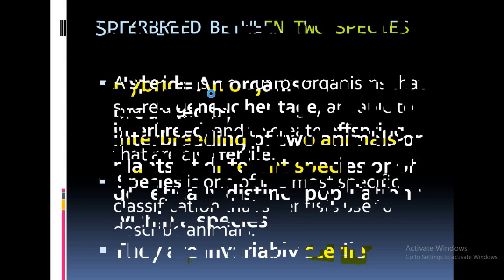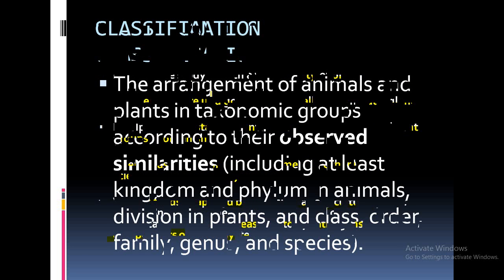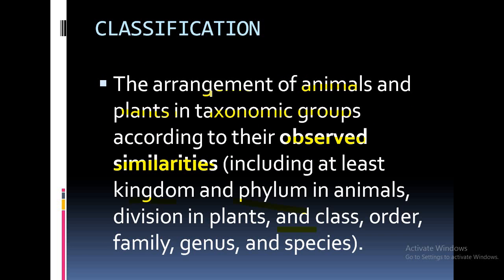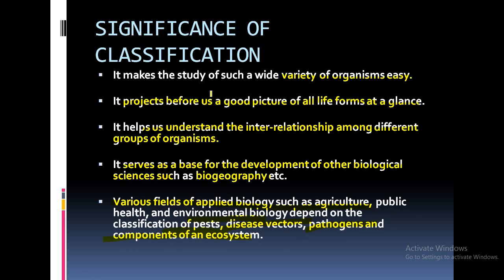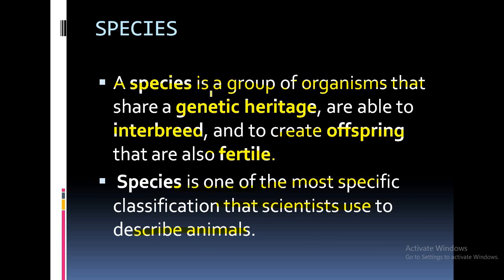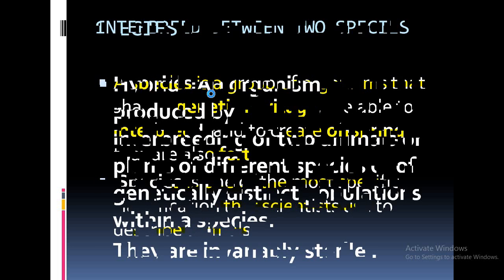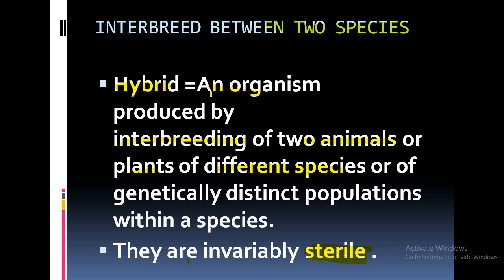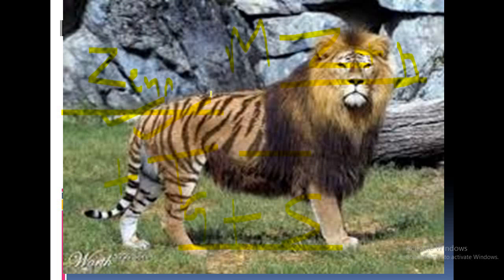Your homework is to write the definition of classification, write the significance of classification, define species, define hybrid, state the characteristics of hybrid, and give all the examples of hybrids mentioned in your book. Thank you everyone.